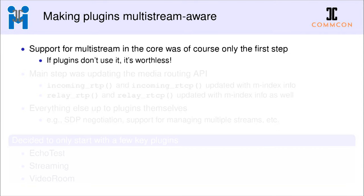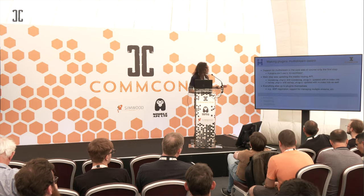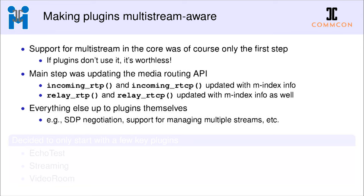Plugins are very important and need to be aware of this functionality too — if the core knows about multiple streams but plugins don't, we can't make a multi-stream conference. The first step was to update all methods handling RTP and RTCP packets, both incoming and outgoing, to include information about which M-line. Now each time a plugin receives an RTP packet, it can say 'this is the third video M-line' and act accordingly. For plugins using our SDP utilities to create and parse SDPs, they had to be updated to take advantage of these multiple stream features.